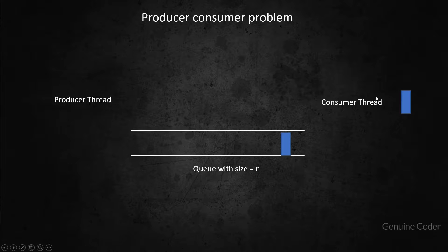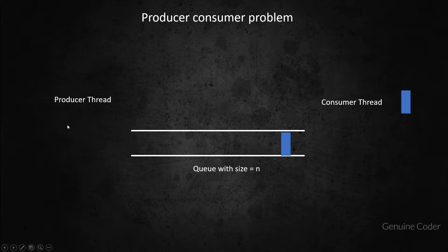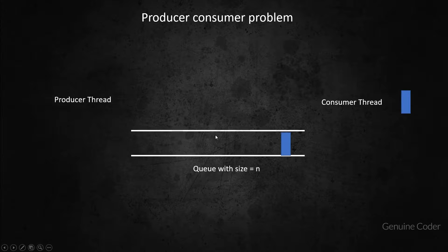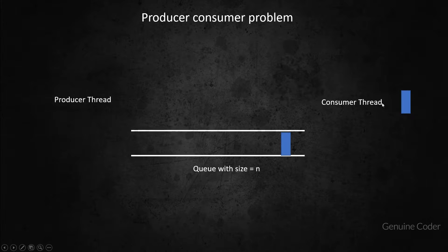The consumer thread, on the other hand, continuously waits for the queue to get some data. Remember, the producer and the consumer are running parallelly, so they are waiting on the queue at the same time and working on the queue at the same time. The producer thread will keep on producing until the queue is full and the consumer thread will keep on consuming until the queue is empty.